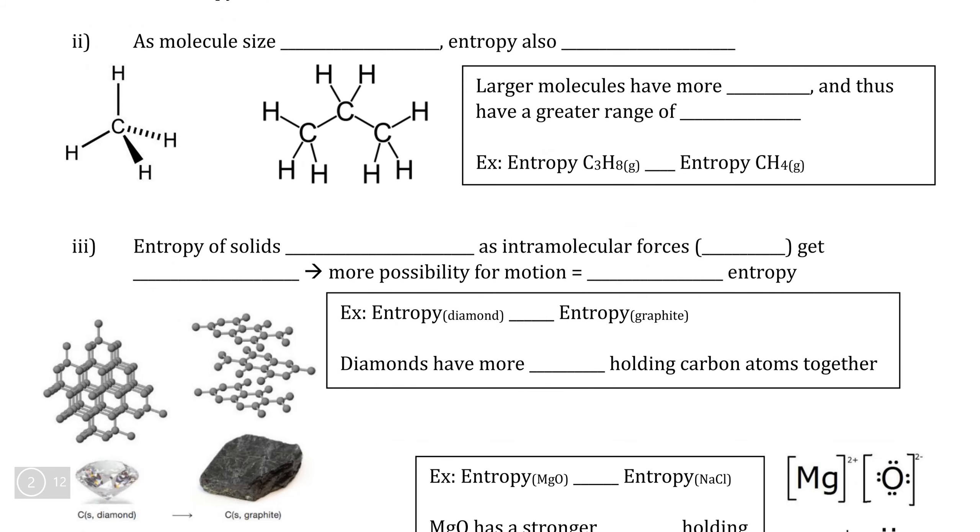Next, we can look at the effects of entropy at the molecular level. Now, if we consider these two hydrocarbons here, methane and propane. If you said that methane has a lower entropy than propane does, we can look at why this is. So a trend that we see is that as molecule size increases, entropy is also going to increase.